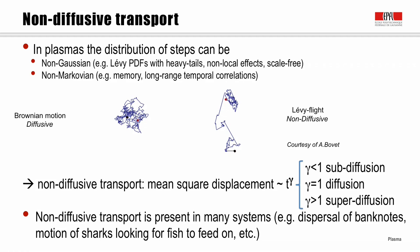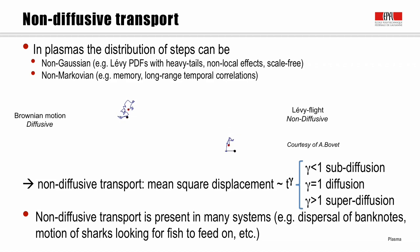Lévy flights involve effects that are non-local between different parts of the plasma — effects not well described by a single scale, so-called scale-free effects. For the step size, the distribution may not be Gaussian. Additionally, we may have situations that are non-Markovian: each step is not necessarily independent of the previous step, meaning there may be memory in the system and long-range correlations also in time. These are situations not described by the very simple classical model.